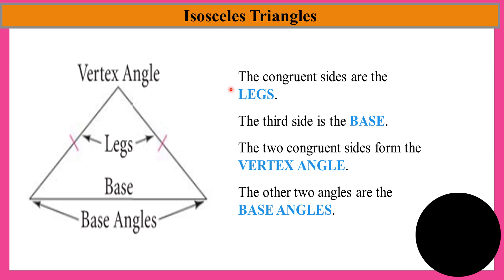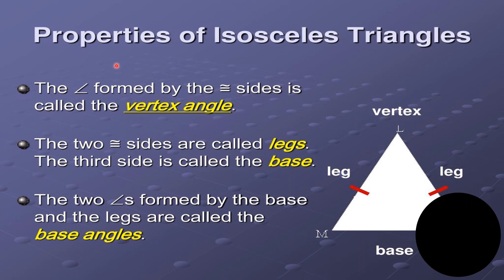Isosceles triangles have two congruent sides, called legs. The third side is the base, and the two congruent sides form the vertex angle. The two angles formed by the base and the legs are called base angles.